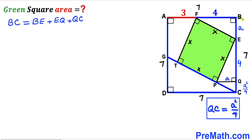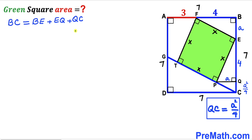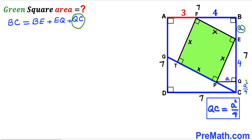Now let's observe that the full side BC of the blue square equals the sum of three segments: BC equals BE plus EQ plus QC. BC is 7 units, BE is lowercase a, EQ is 4, and QC is a squared over 4. So we write: 7 equals a plus 4 plus a squared over 4.